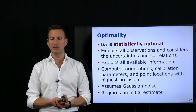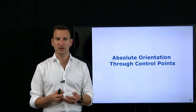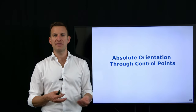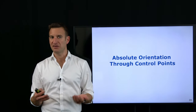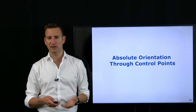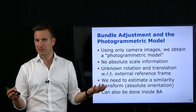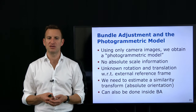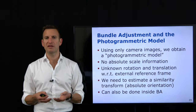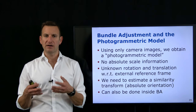Now I want to look into the absolute orientation through control points. Absolute orientation is the task of anchoring the model we have created in the real world and also fixing the scale — fixing a similarity transform between the model I've computed and the real world. Why do I need this? Because the reconstruction from camera images without any additional information only gives us a so-called photogrammetric model — one that is only defined up to a similarity transform.